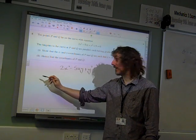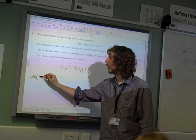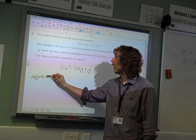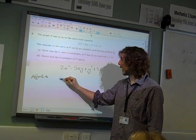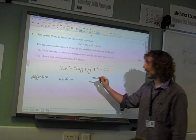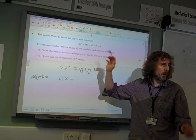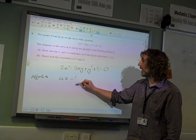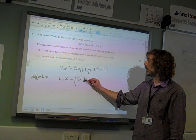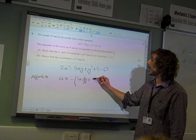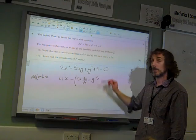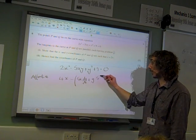If we differentiate with respect to x, we get 4x minus... now this is a product, 5x times y, so it is the first times the derivative of the second plus the second times the derivative of the first. That's the product rule.